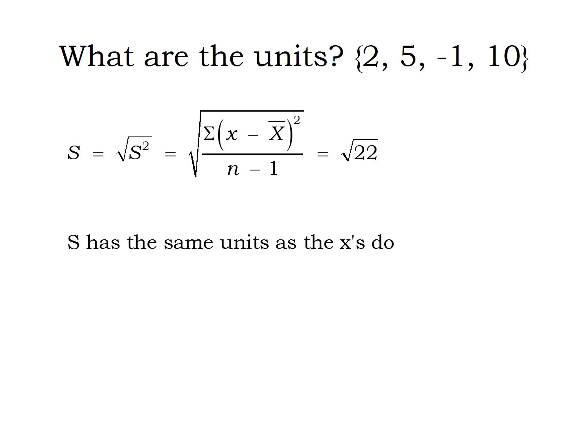So if your data set is in hours, your sum of the values will be in hours, your average will be in hours, your variance will be in squared hours, or hours squared, and the standard deviation would be back in hours.